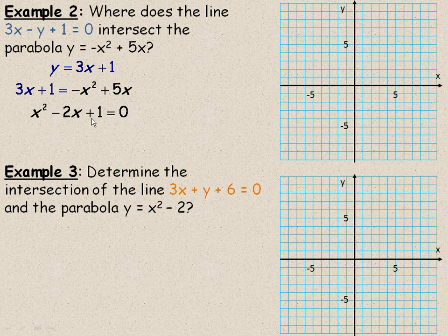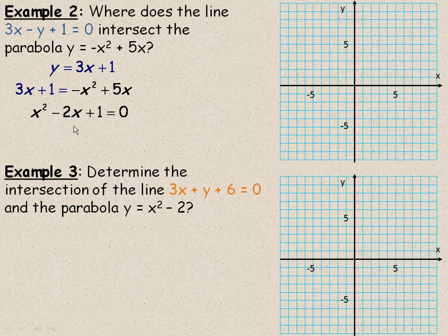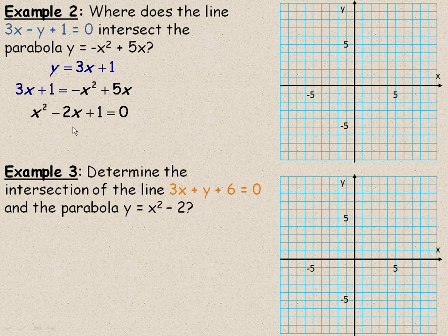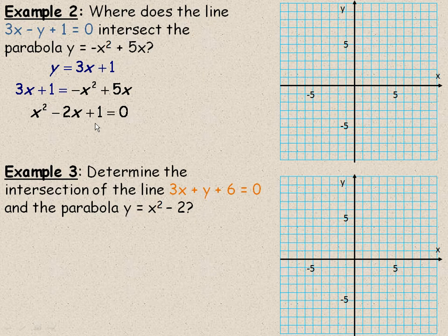Now, you could use the quadratic formula here, but this does factor fairly easily. To factor into two binomials, you're looking for what adds to -2 and multiplies to positive 1. And of course, they're both -1. So this factors into (x - 1) and another (x - 1). And since both factors are the same, we could write that as (x - 1)² = 0.